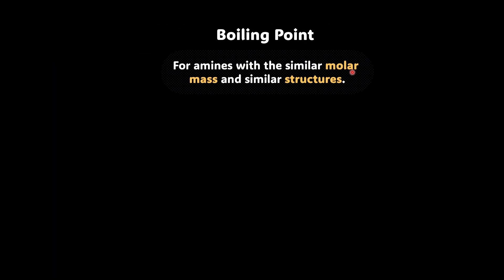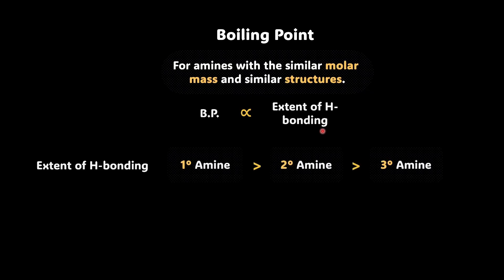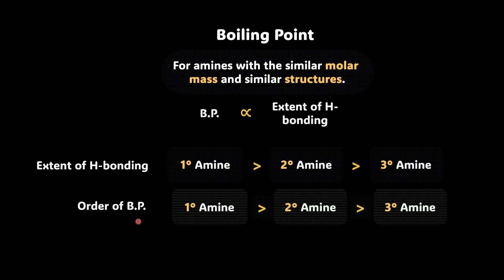In a nutshell, for amines with similar molar mass and similar structure, boiling point is proportional to the extent of hydrogen bonding. This is because hydrogen bonding leads to significantly stronger intermolecular forces of attraction between the amine molecules, and we need more energy to overcome these forces. The extent of hydrogen bonding is maximum in primary amines, then secondary, and least in tertiary amines, and the order of boiling point follows the same trend.